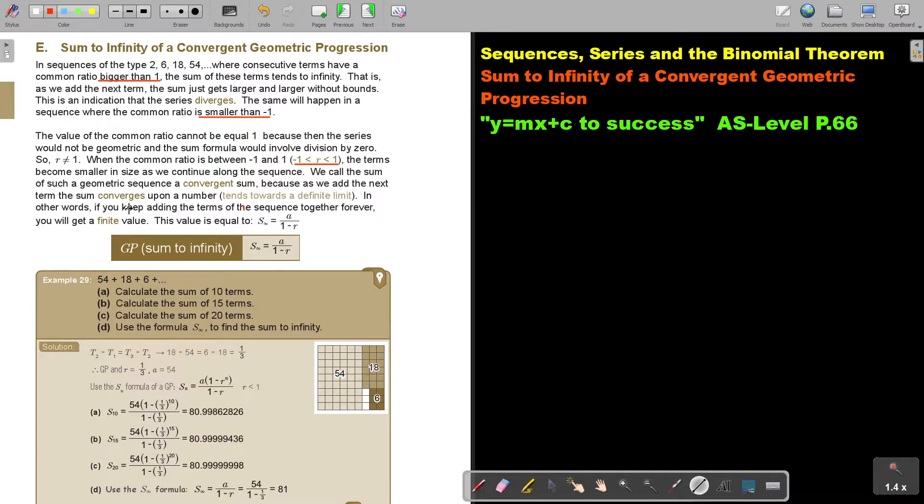In other words, if you keep adding the terms of the sequence together forever, you will get a finite value. The value will be equal to S to infinity is equal to A over 1 minus R. So, it will strive to a definite answer. Okay, let's look at an example.